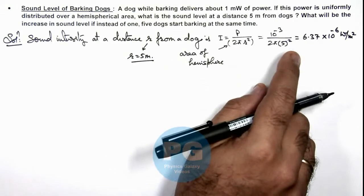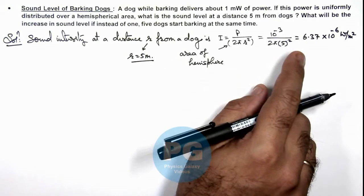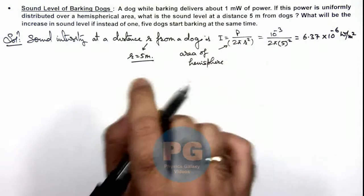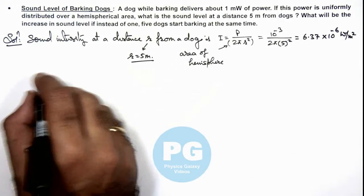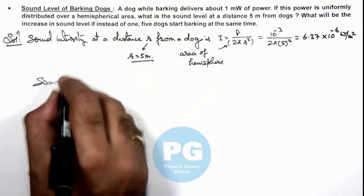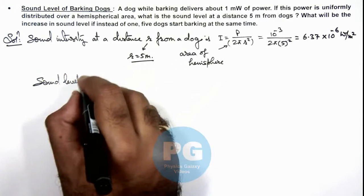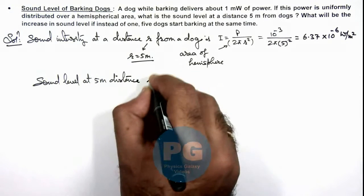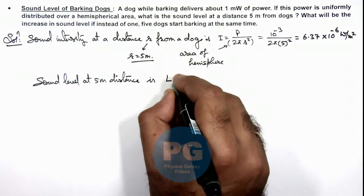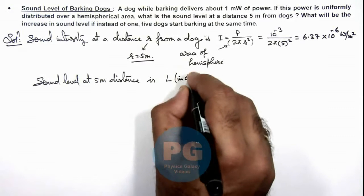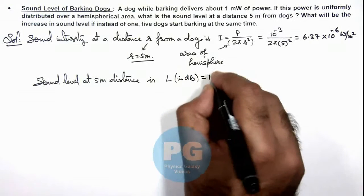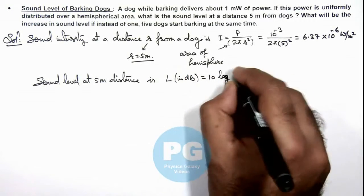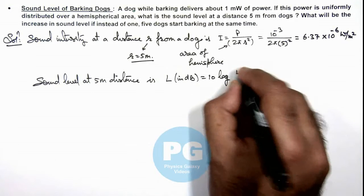Now if we calculate the sound level at this point where intensity is given by this value, the sound level at 5 meter distance is L, which is measured in decibels, can be given as 10 log of i by i₀.